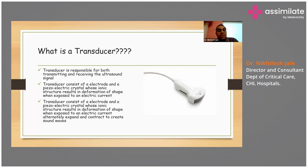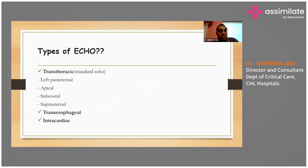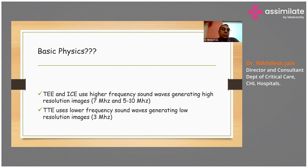Then we come to types of echo. The usual standard echo is transthoracic, in which you have certain views called left parasternal, apical views, and suprasternal views. Our main focus today will be on transthoracic echo. Transoesophageal echo and intracardiac echo use higher frequency sound waves, which generate higher resolution images, to the tune of three megahertz.